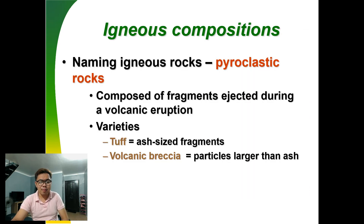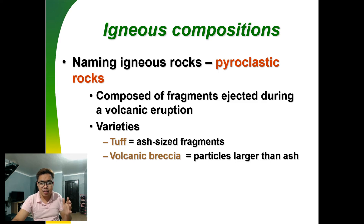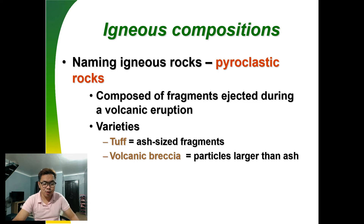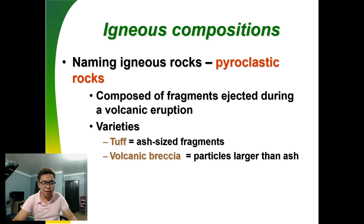Pyroclastic rocks are composed of fragments ejected during volcanic eruptions. They come in two varieties: tuff, made of ash-sized fragments, and volcanic breccia, where the particles are larger than ash.